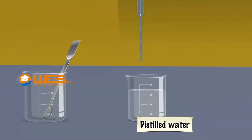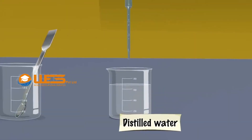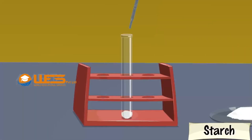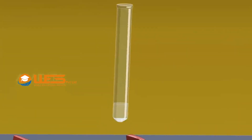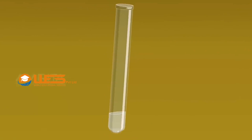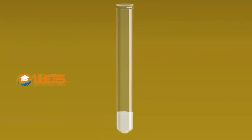Take about 3 ml of distilled water in a dropper. Pour it into the test tube and shake the test tube well. Starch is insoluble in water.